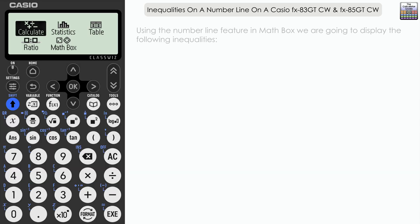We are going to be having a look at the number line feature in the math box app on a Casio FX-83 and 85 GTCW, although the number line feature may be available on other models of calculator too.